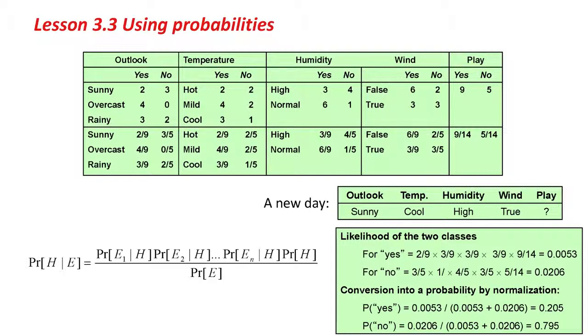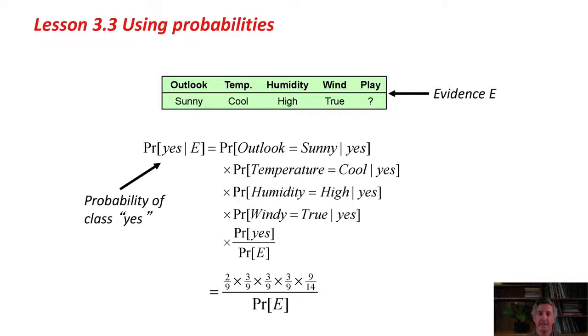Just to go through that again, the evidence is the outlook is sunny, temperature is cool, humidity is high, windy is true. We don't know what play is. The probability of a Yes, given the evidence, is the product of those four probabilities, one for outlook, temperature, humidity, and windy, times the prior probability, which is just the baseline probability of a Yes. That gives us that product of fractions divided by PR. We don't know what PR is, but it doesn't matter, because we can do the same calculation for PR, which gives us another equation just like this. Then we can calculate the actual probabilities by normalizing them so that the two probabilities add up to one. PR plus PR equals 1. It's actually quite simple when you look at it in numbers.